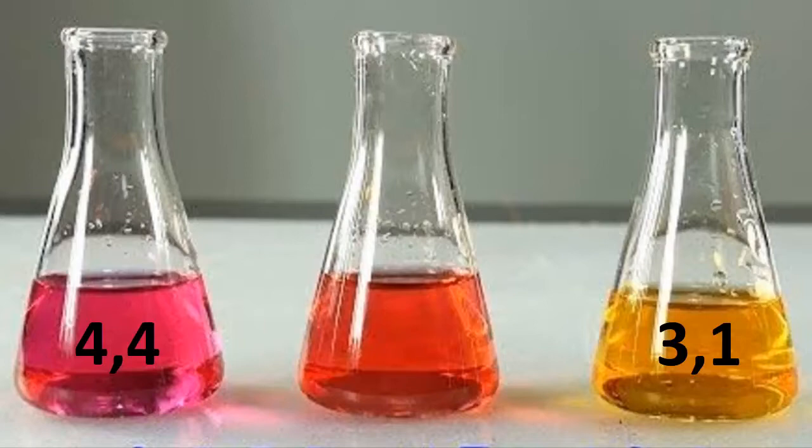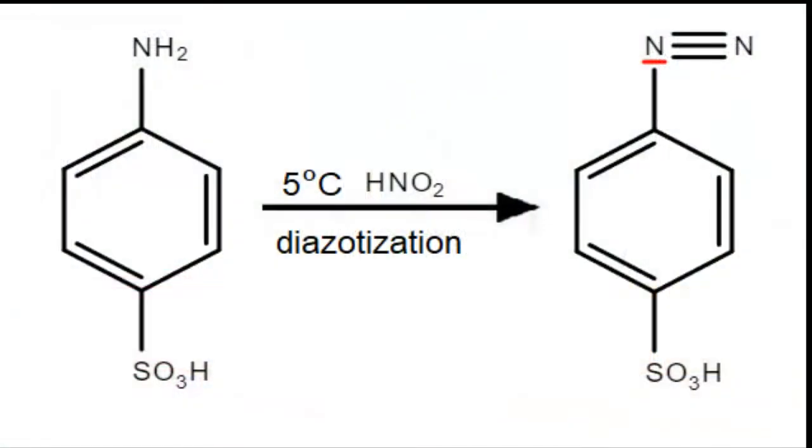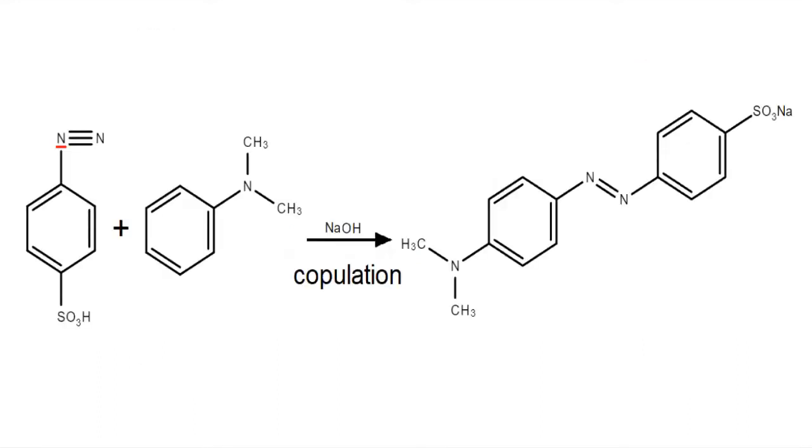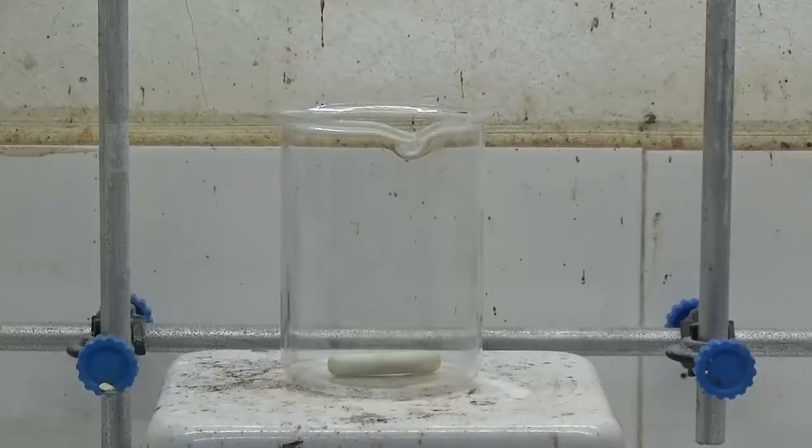Methyl orange is synthesized in two phases. The first is a diazotization of sulfanilic acid with nitrous acid. The second part is a coupling of diazonium salt with dimethylaniline. The following solutions are prepared for the synthesis.